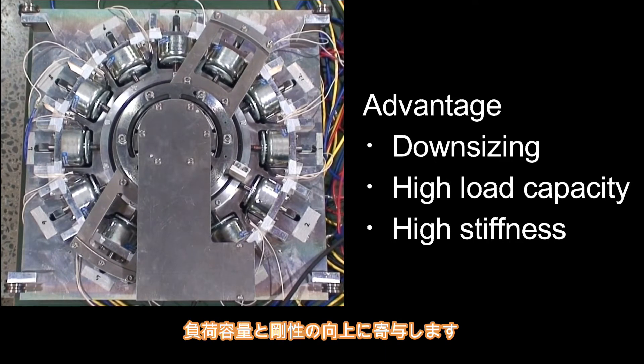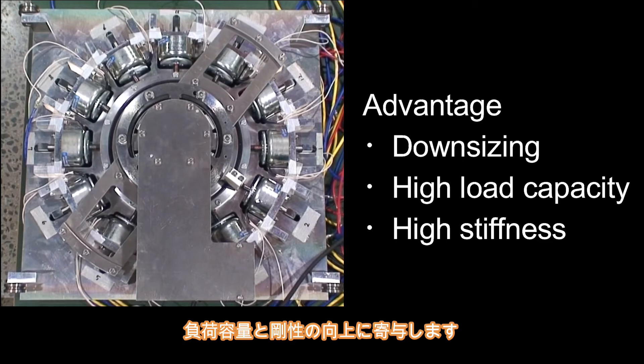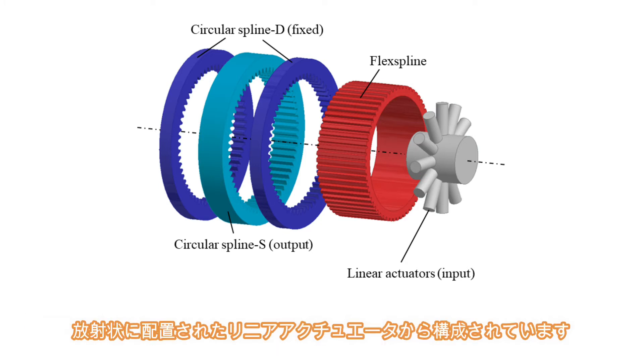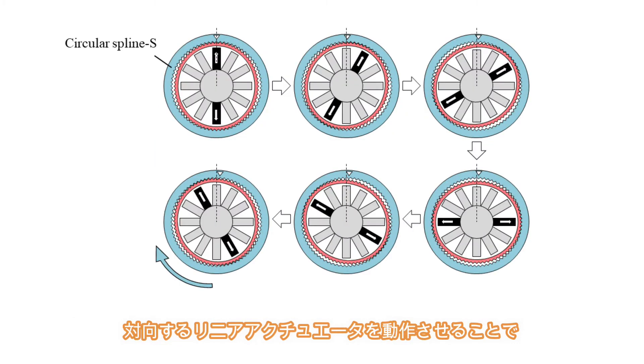By utilizing the engagement of multiple gear pairs, the motor consists of two types of internal gears: circular splines, a thin-walled gear called a flex spline, and linear actuators arranged radially.